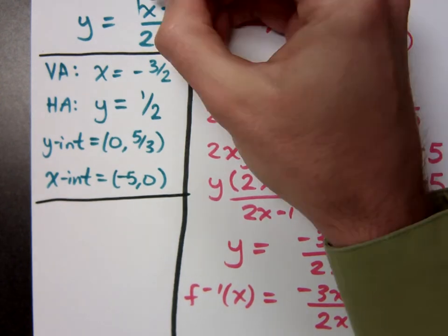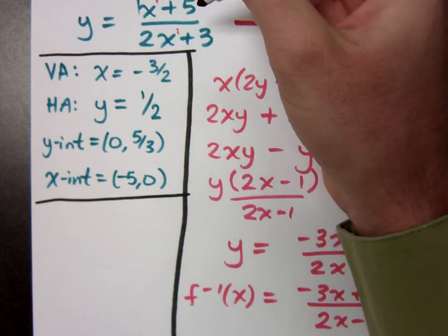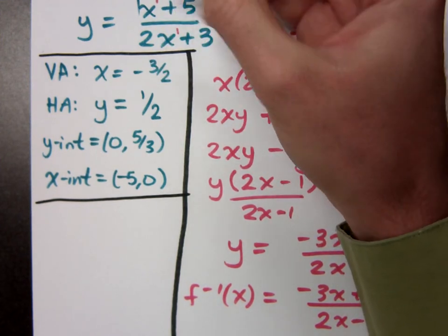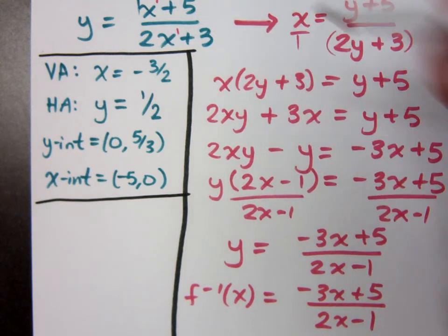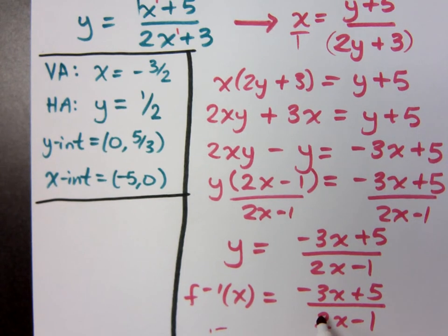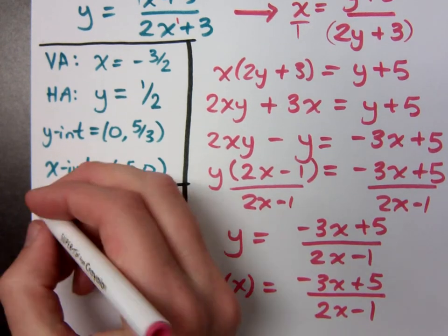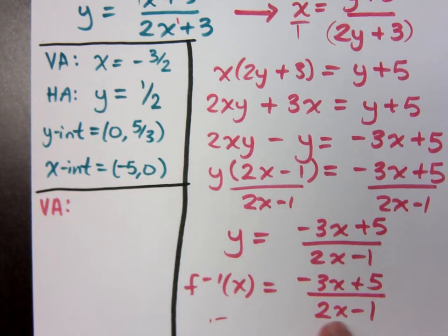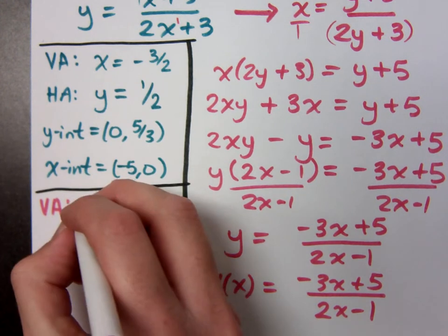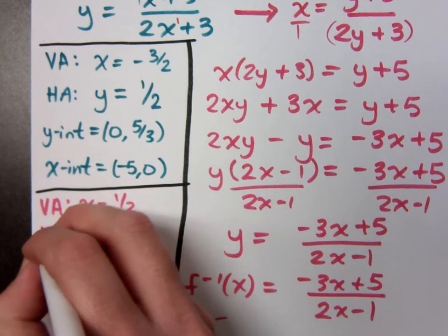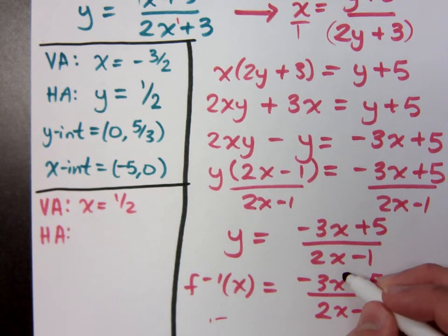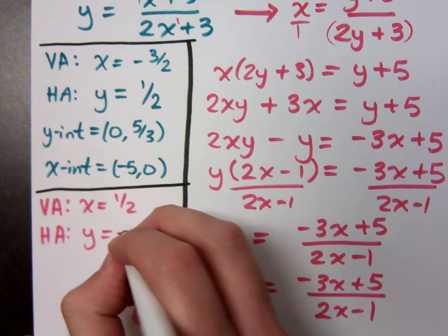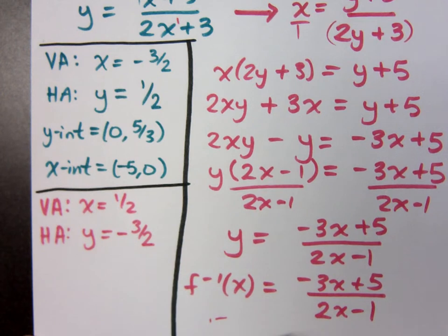The horizontal asymptote is determined by having the same degree in both the top and the bottom, so it's the quotient of those lead coefficients. Now using the pink marker for the inverse function: the vertical asymptote — what makes this denominator equal to 0? x equals 1 half. The horizontal asymptote, since these have the same degree, is negative 3 halves, or more precisely y equals negative 3 halves, since asymptotes are lines.